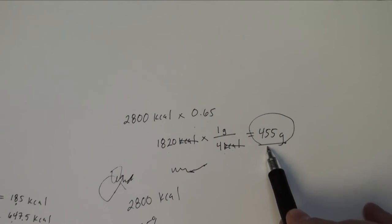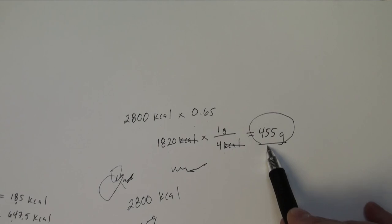So as I'm starting to look at my diet or create my diet, I will want to aim for approximately 455 grams of carbohydrates to make sure I get my 65% total coming from those carbohydrates.